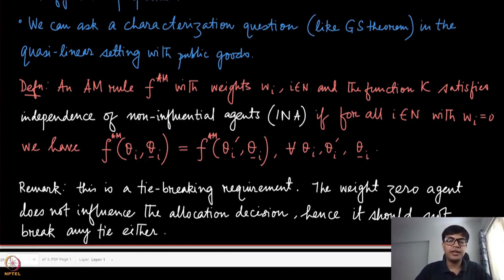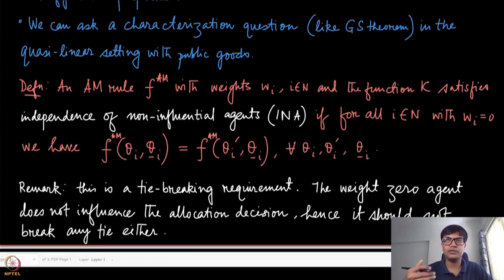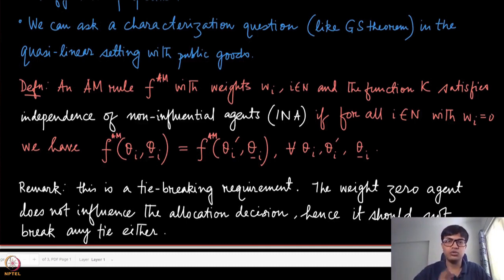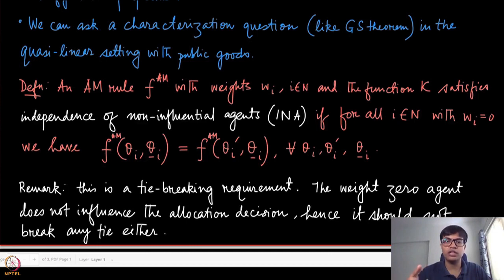In order to define that characterization, we first need to define one additional property known as the Independence of Non-Influential Agents (INA). The name becomes very evident when we define it. It says that whenever there exists some agent whose weight is zero — so it has no importance in making the final decision — there could be a situation where there are ties: the affine maximizer sum is the same for two different allocations. In that case, we should not break these ties based on the preferences of this agent, whom we call the non-influential agent, because it has zero weight.